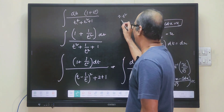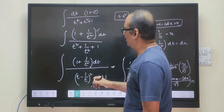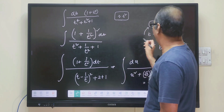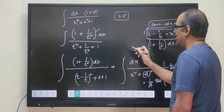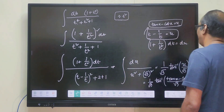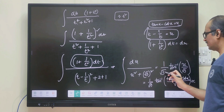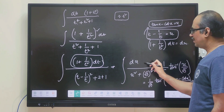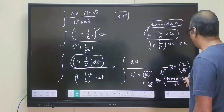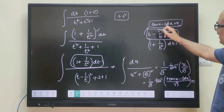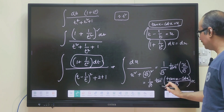In this type of problem, we divide by t square so we get the numerator as 1 plus 1 by t square, then arrange the denominator so its derivative matches the numerator. We take t minus 1 by t equals u — if the sign were minus, we would take t plus 1 by t instead. Since it is plus, we take t minus 1 by t. The whole derivative part becomes du, leaving us with du by u square plus root 3 whole square. Using the standard formula, the integral of dx by x square plus a square equals 1 by a tan inverse x by a, giving 1 by root 3 tan inverse of u by root 3, where u equals tan x minus cot x, so the final answer is 1 by root 3 tan inverse of tan x minus cot x by root 3 plus c.